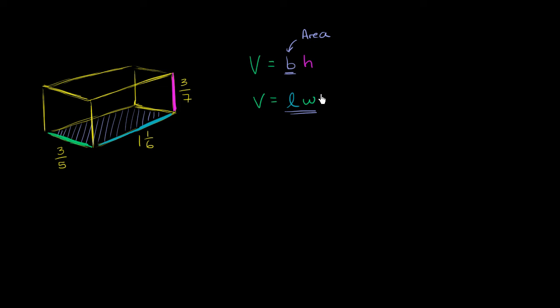And of course, you still have to multiply times the height. Or another way of thinking about it, you're going to multiply your length times your width times your height. You're going to multiply the three dimensions of this thing to figure out how many unit cubes could fit into it, to figure out the volume.